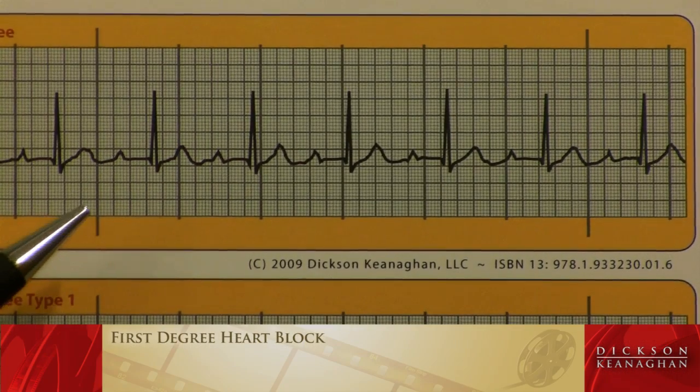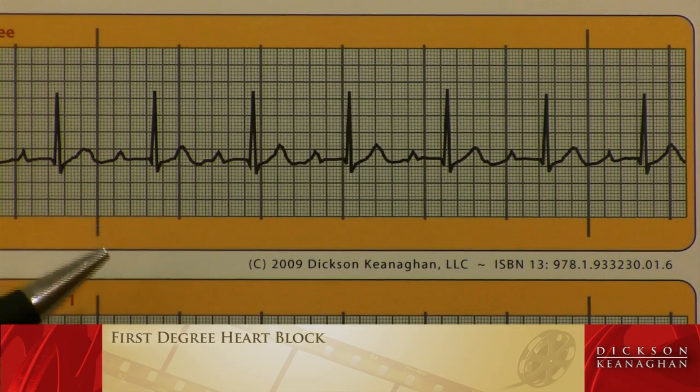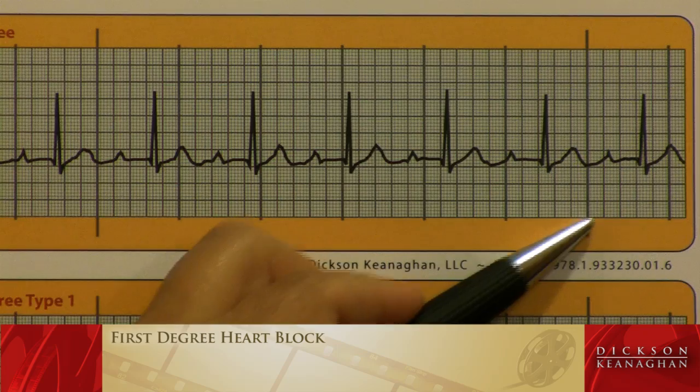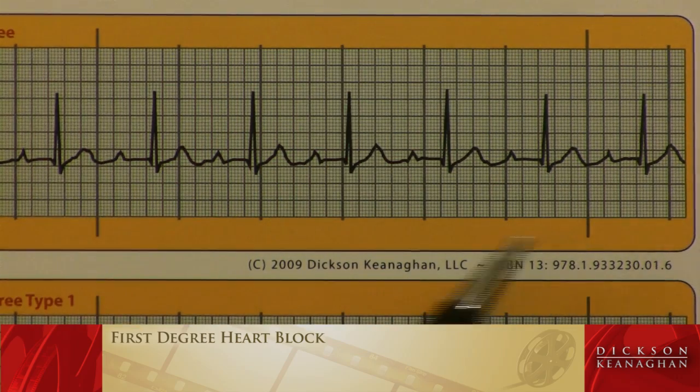The first one we're going to start with is the first degree heart block. It says right on the study guide that the PR interval is prolonged greater than 0.20 seconds, but the PR interval will be constant. Now we're going to go to the picture on the wall and see if we can find that. Here is a first degree heart block. These dark lines will mark out a six-second strip for us.